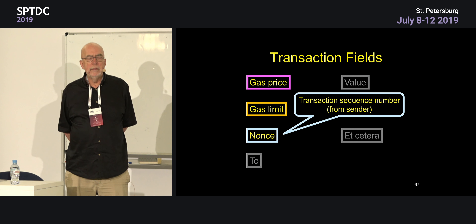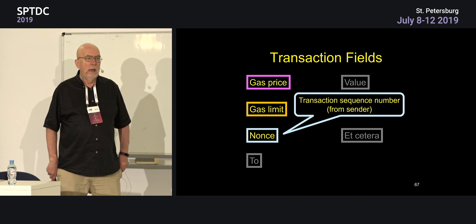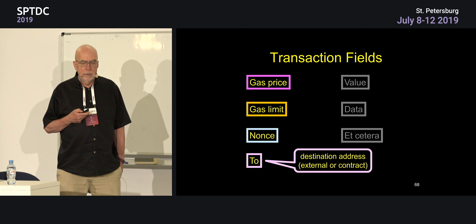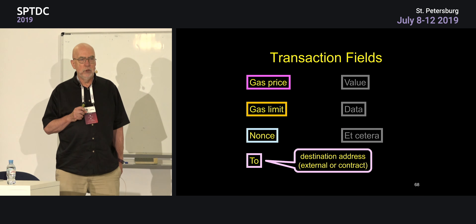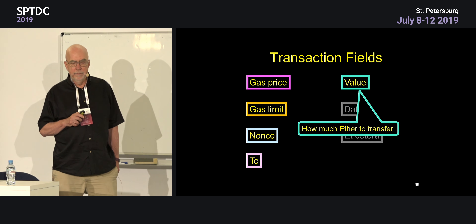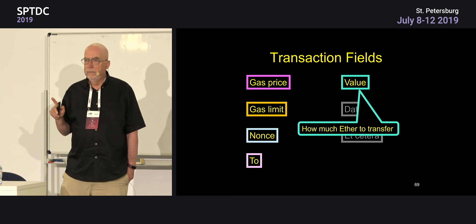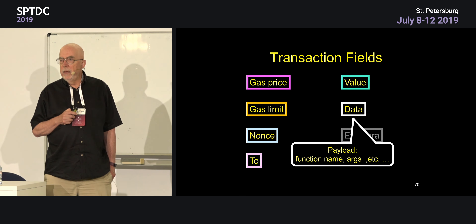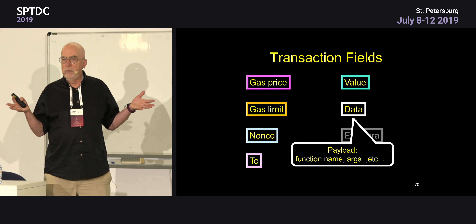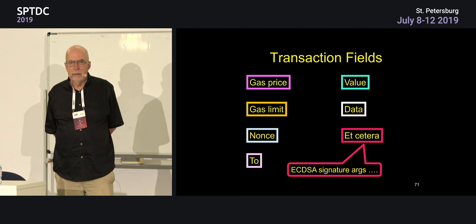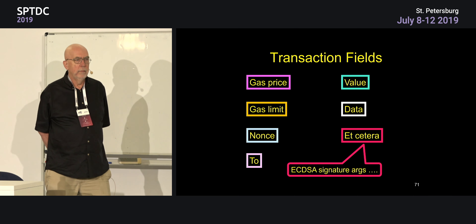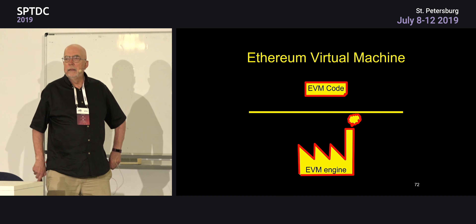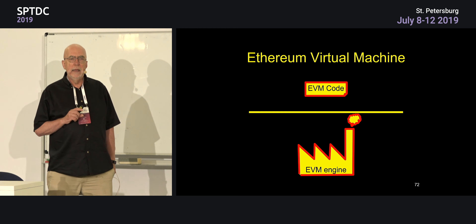A transaction sequence number is used for technical reasons to avoid replay attacks — every transaction has a unique sequence number. There's the destination address — to whom you're sending the transaction — which might be sending money to another person or calling a function exported by a smart contract. There's the amount of ether being sent, which is different from the gas — if you're buying a pizza, this is the money you send to the pizza store. There's data — if you're calling a contract, this would be the argument. All of this is executed by an Ethereum virtual machine.